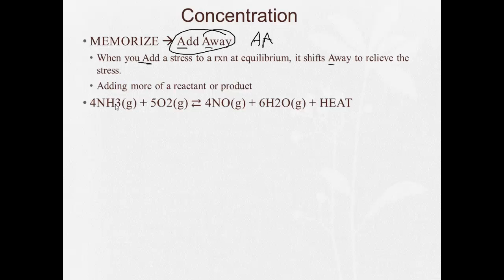4NH3 plus 5O2 is going to give us 4NO plus 6H2O plus heat. So let's think here. What will happen if we add more H2O? So let's say we add more H2O to this reaction.